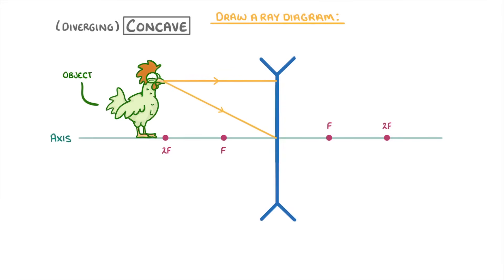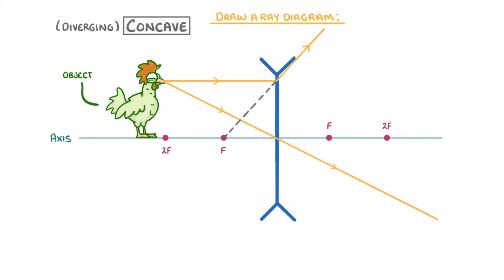Because this second ray went through the centre, it won't be refracted at all, and it'll just continue on straight. This first ray though will be refracted, and to find the angle it will be refracted at, we need to draw a virtual ray between this point where it hits the lens and the principal focus, or focal point, which we labelled f earlier. We normally draw this as a dashed line between the focal point and the lens, but then a solid line as it continues past the lens.